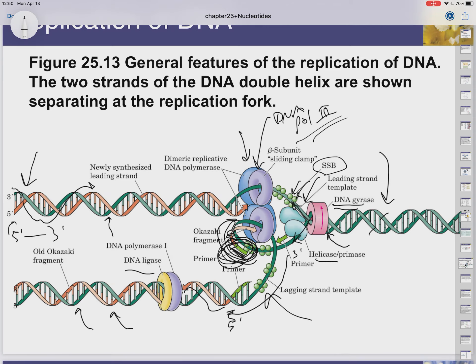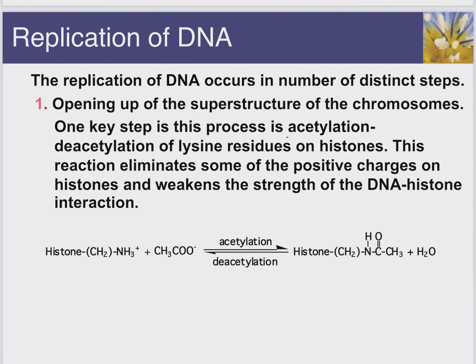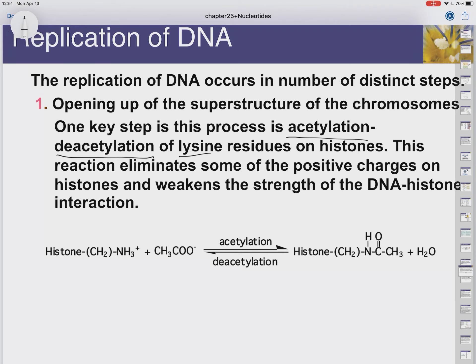DNA gyrase is also involved in unwinding and opening the replication fork. The DNA polymerase has a subunit called a sliding clamp — there are great YouTube videos showing it like a little machine holding the strands apart. We get two daughter strands, and that's how DNA gets replicated.